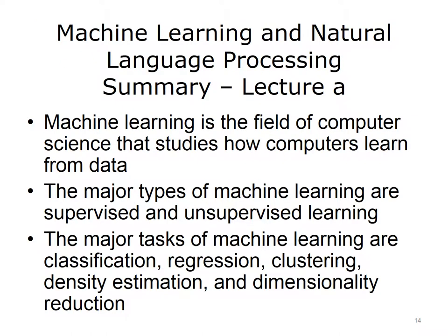This concludes Lecture A of Machine Learning and Natural Language Processing. In summarizing this lecture, we learned that machine learning is the field of computer science that studies how computers learn from data. The major types of machine learning are supervised and unsupervised learning. The major tasks of machine learning are classification, regression, clustering, density estimation, and dimensionality reduction.